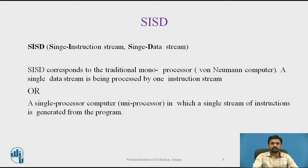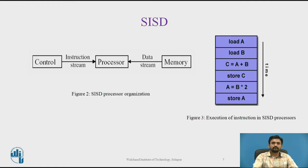In the SISD kind of structure, it corresponds to the traditional monoprocessor, that is Von Neumann based type of computers. A single data stream is processed by one instruction stream — at one time, one instruction is executed. Single processor computers consist of a unit processing system in which a single stream of instructions is generated from the program. The figure represents the organization of a simple SISD computer having one control unit, one processor unit, and one memory unit.